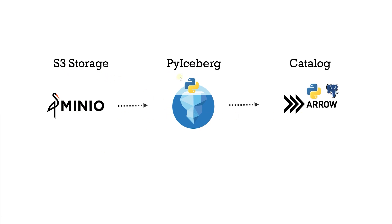We use PyIceberg, a Python-based Iceberg library, for accessing Iceberg tables without the need of a JVM. For catalog, we have various options to choose from. To keep the setup simple and Python-based, we are using PyArrow, the Python API for Apache Arrow. For catalog, we use the SQL catalog to interact with the object store. This stores information in a Postgres database. We'll also configure the catalog to store data files in the local S3.